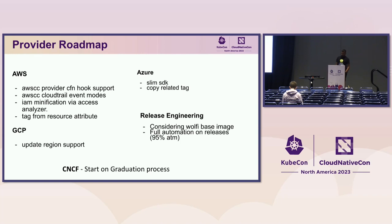For Azure, we're continuing to look at how we can slim the Azure SDK down — an ongoing thread with the Azure team for a few years. The Azure SDK for all the APIs we use is well over a gigabyte because it's mostly generated code, and we're trying to get it to something reasonable since it bloats our Docker images. We're also looking at adding the ability to copy tags from a subscription or resource group down to the underlying resource.